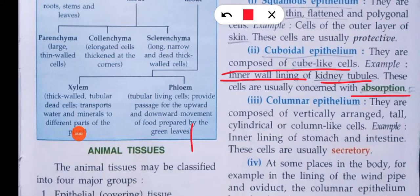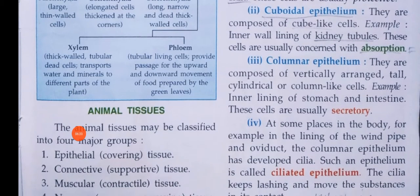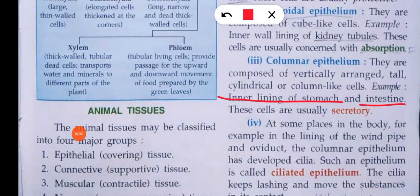Columnar epithelium is found in the inner lining of the intestine and stomach. It is usually involved in secretion and absorption. These cells are composed of vertically arranged, tall, cylindrical, column-like cells. They are cylindrical and vertically arranged, found in the stomach and intestine.